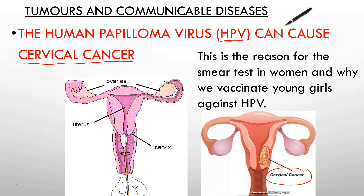Benign tumours are normally contained in one place, usually within a membrane, and they are not cancerous. They don't invade other parts of the body, but they can still grow quickly. To give an example of an extreme case, they can be dangerous if they put pressure on or damage an organ. Here's an example of a benign tumour growing on the eyelid — it would be annoying and irritating, but fairly simple to remove under a local anaesthetic with a couple of stitches. Benign tumours do not cause cancer.